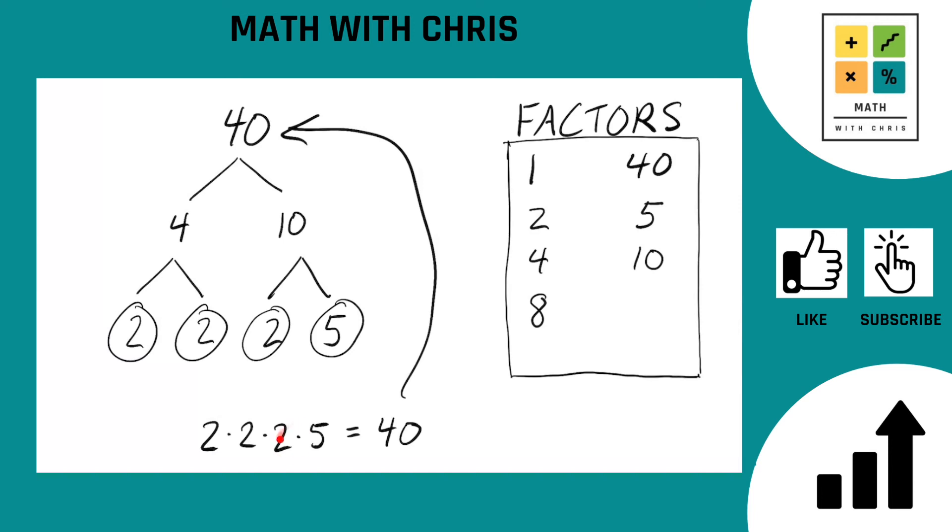And what about, how about 2 times 5? We already got 10. What about 2 times 2 times 5? 2 times 2 times 5 is 20. We do not have 20. Add 20.